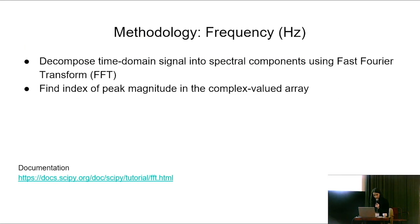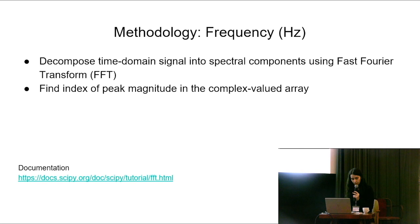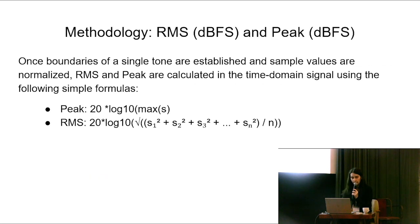And in brief, just the methodologies for determining the values themselves. Because I had to do so much signal processing to get to the point of tone detection, it was trivial for me to just calculate this instead of making an external call to FFmpeg. So for frequency, I decompose a time domain signal into its spectral components using fast Fourier transform, and then I find the index of the peak magnitude in the complex valued array. This is basic physics, but those are the formulas I use.